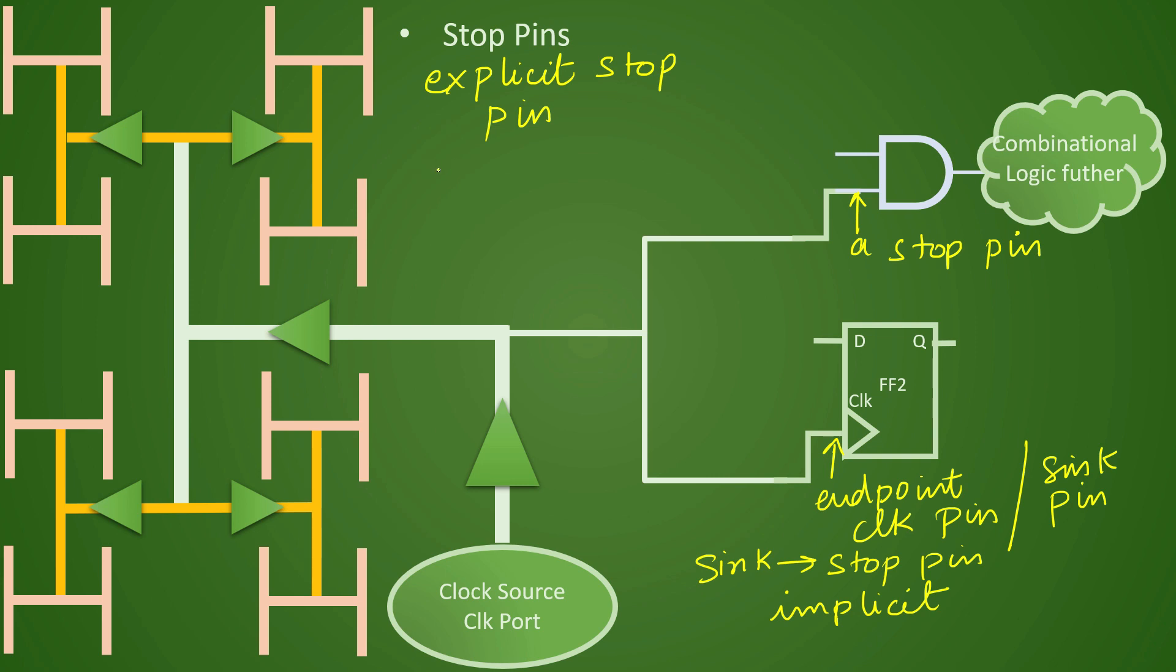So in fusion compiler we have is_stop_pin as an attribute which can be set to true. In that case it becomes your stop pin and tool will have to balance the delays between this pin and this clock pin if they are on the same level of hierarchy.